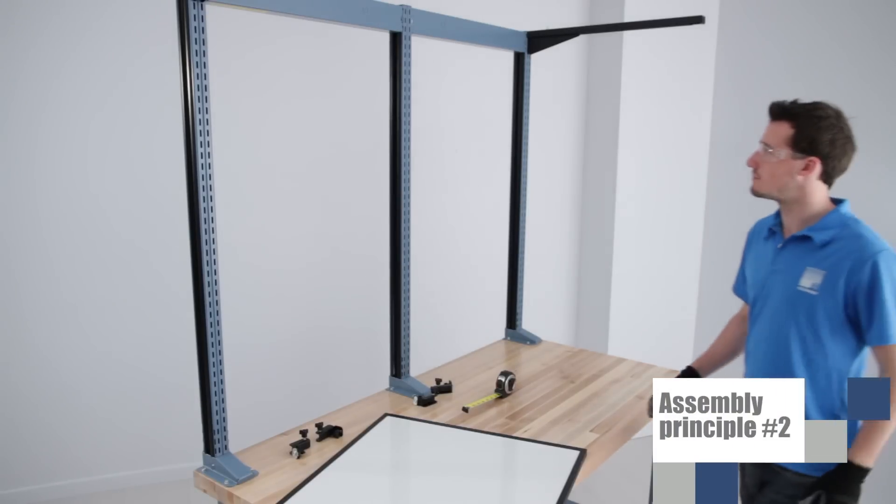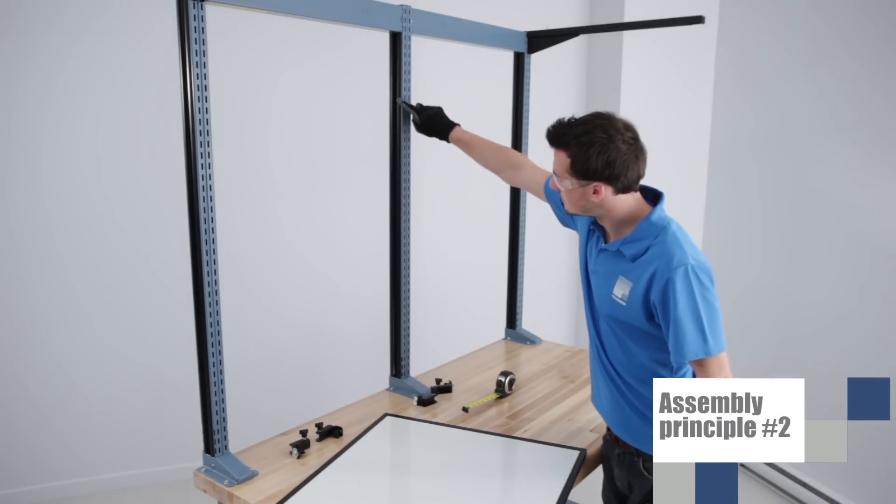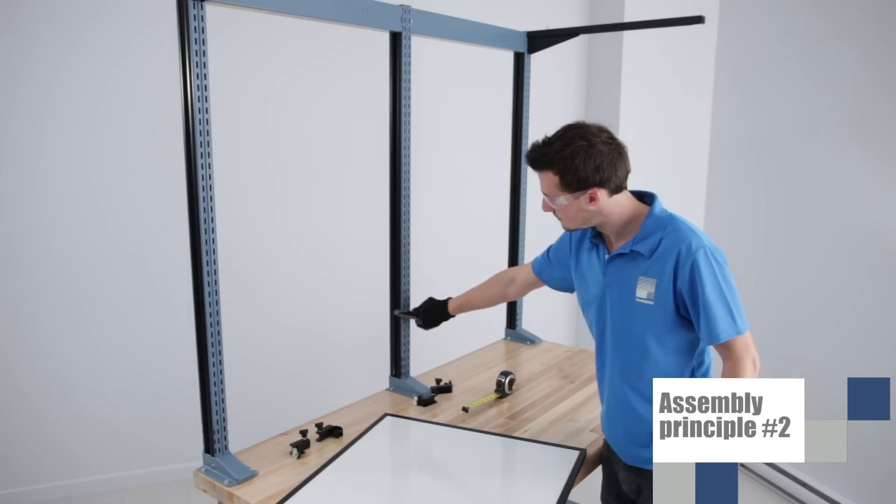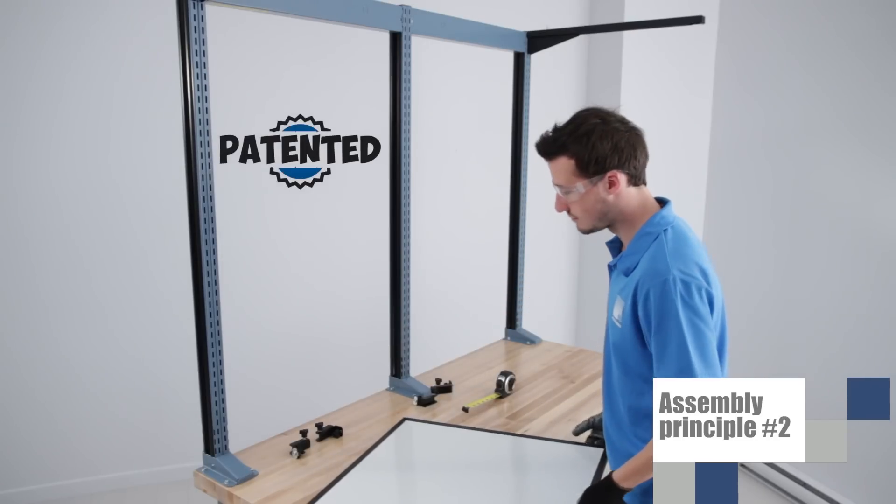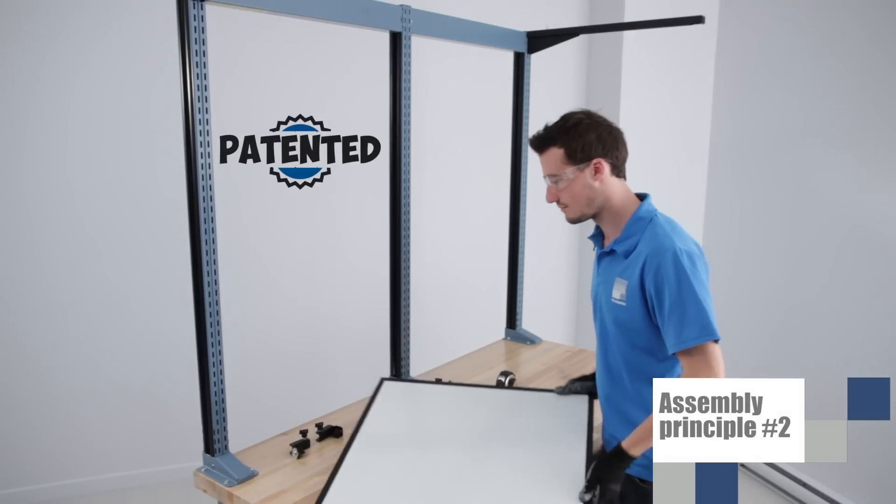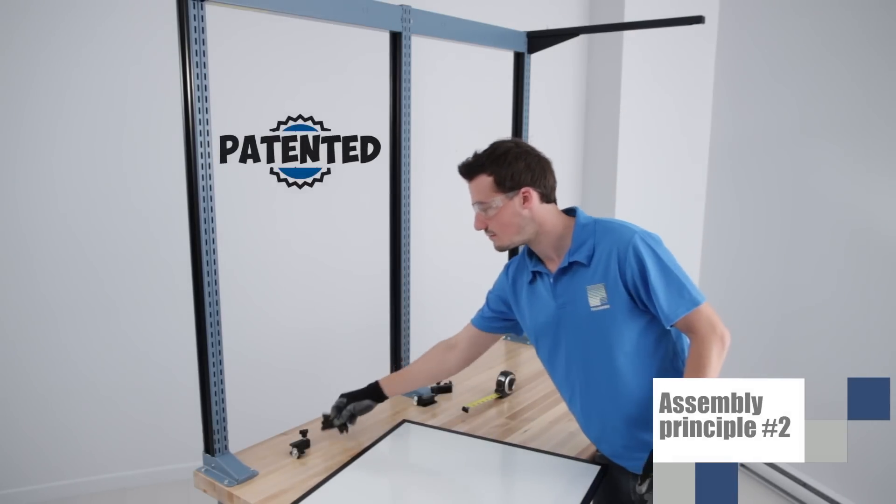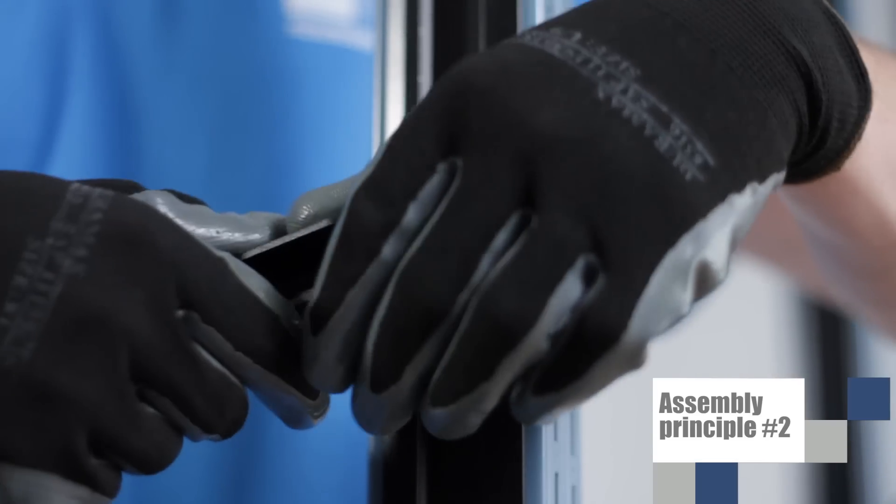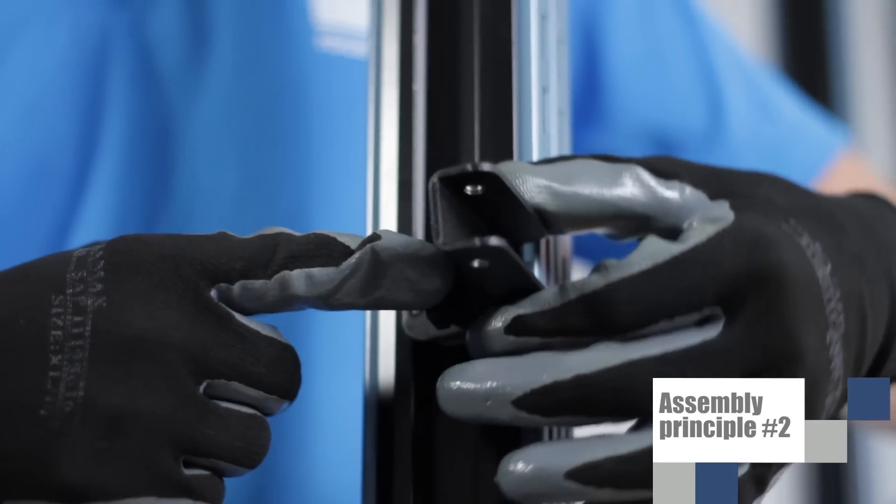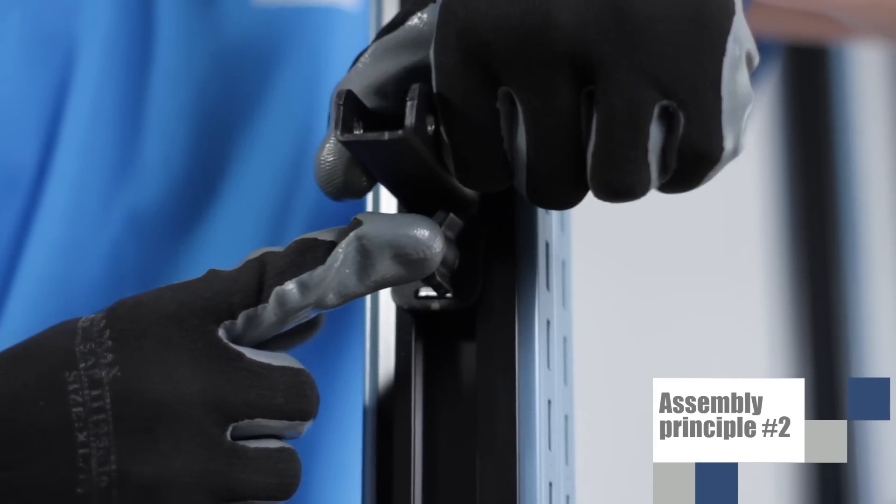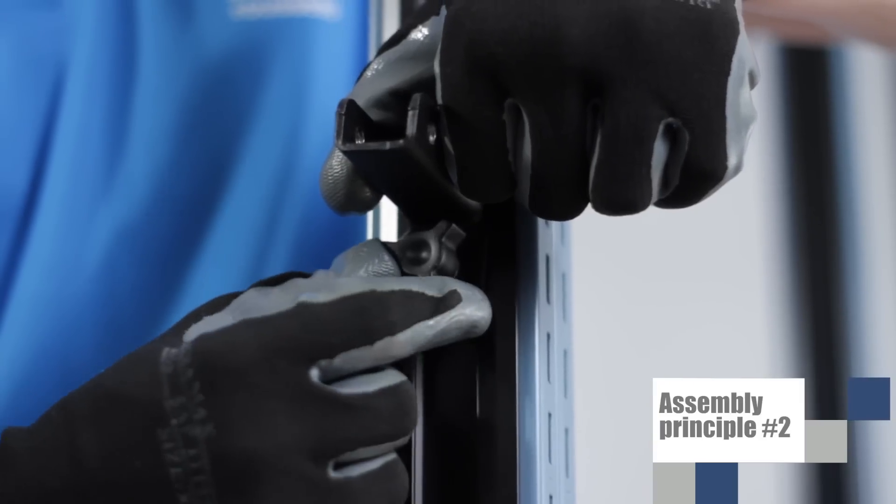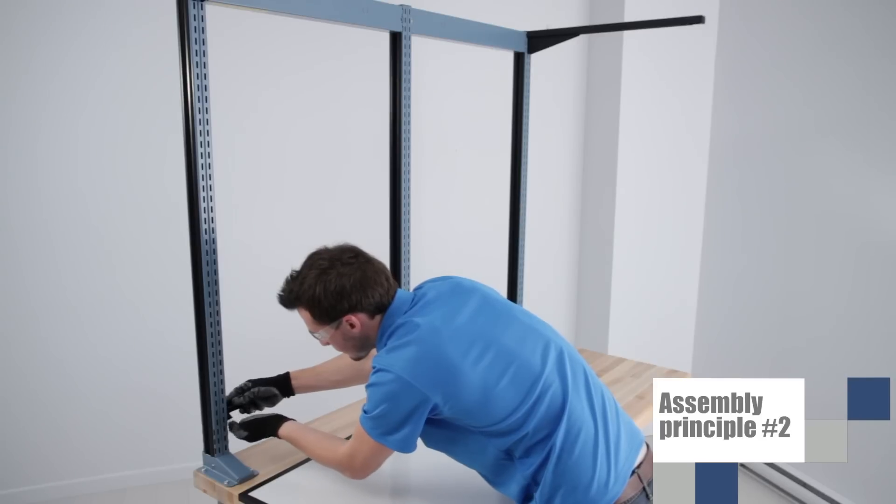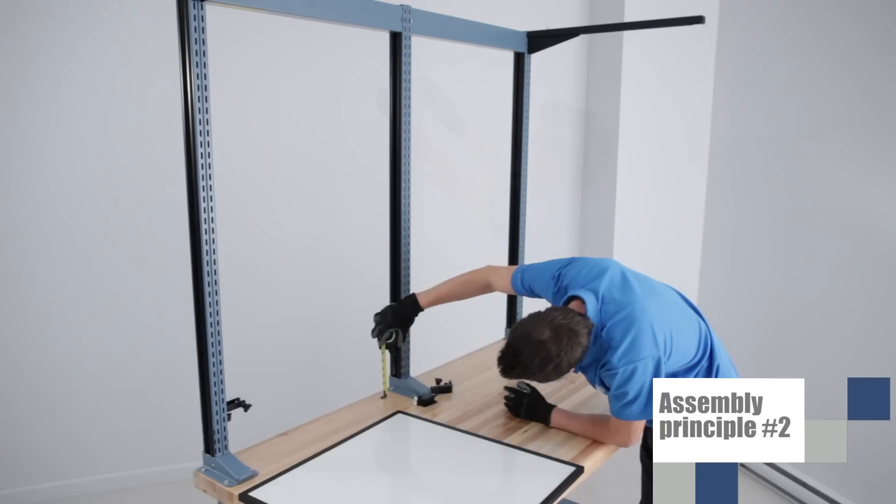Another assembly technique is that of sliding accessories into the aluminum extrusion on the side of the uprights. This is a Rousseau patented design. For example, this whiteboard is installed with a kit of four brackets. Simply insert, pivot, and tighten. Repeat the process for the three other brackets, making sure they are level.